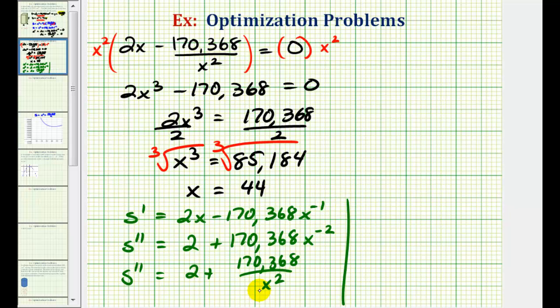Notice if we substitute 44 for x into the second derivative, this would be positive. So if the second derivative is positive, that means the function is concave up at x equals 44. And therefore, at x equals 44, we must have a minimum value.